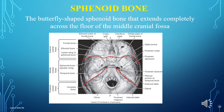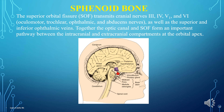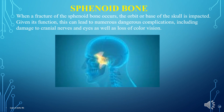The butterfly-shaped sphenoid bone extends completely across the floor of the middle cranial fossa. It is a compound bone that forms the base of the cranium, behind the eye and below the front part of the brain, with two pairs of broad lateral wings and several other projections, and contains two air-filled sinuses. The superior orbital fissure transmits cranial nerves 3, 4, V1, and 6 — the oculomotor, trochlear, ophthalmic, and abducens nerves — as well as the superior and inferior ophthalmic veins. Together, the optic canal and superior orbital fissure form an important pathway between the intracranial and extracranial compartments at the orbital apex. When a fracture of the sphenoid bone occurs, the base of the skull is impacted, which can lead to numerous dangerous complications including damage to cranial nerves and eyes, as well as loss of color vision.